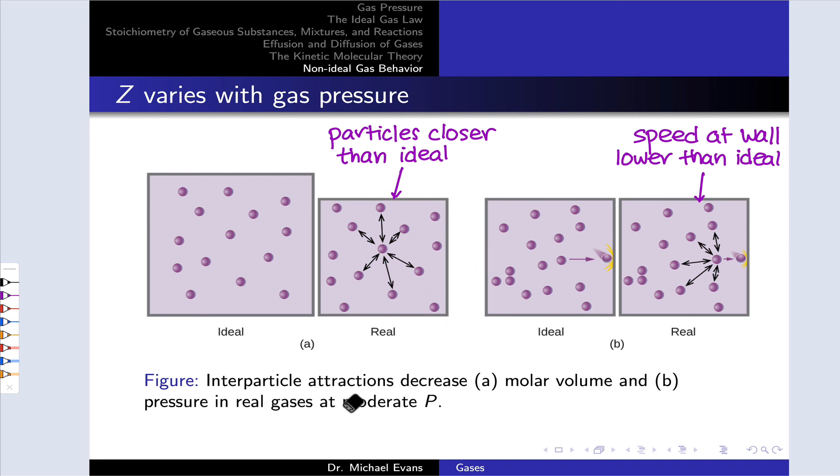And we also observe a lower pressure in real gases than would be expected based on the ideal gas model because of those attractive forces. Particles that are approaching the wall are pulled on from behind by the gas particles behind them that are engaging in attractive interparticle forces. And so they're moving more slowly when they hit the wall, and this results in a decreased pressure.